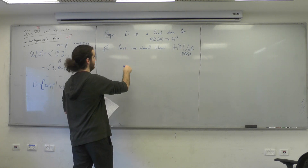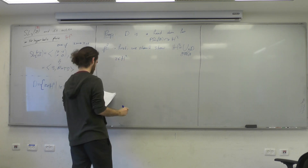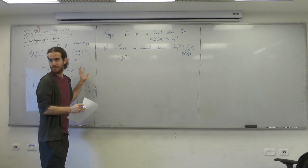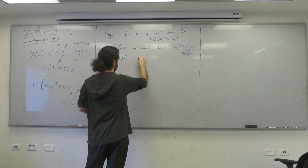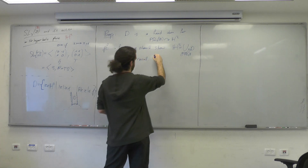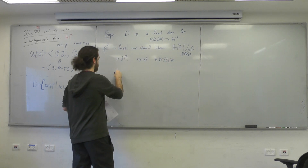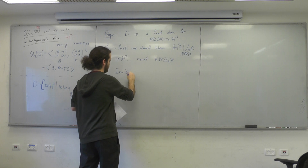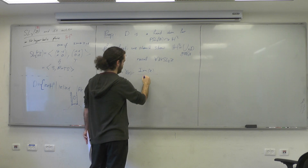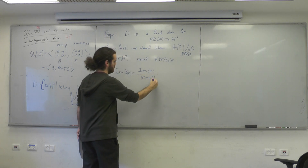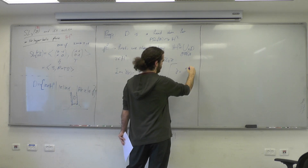Let Z be in the upper half plane. Recall that for any gamma in SL2Z, the imaginary part of gamma(Z) equals the imaginary part of Z over |CZ + D|² where gamma = [[a,b],[c,d]]. Writing Z = x + iy, this equals Im(Z) over (Cx + D)² + (Cy)², which we denote T(C,D) when x and y are fixed.